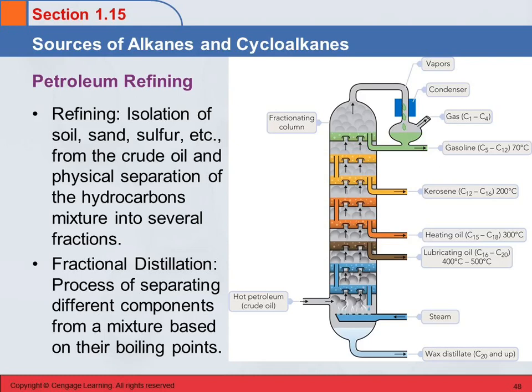So we take this crude oil, and this is an example of fractional distillation. They separate out the contaminants like sand and sulfur and stuff. Then they take the hydrocarbons that are left and do this fractional distillation. Distillation separates things based on their boiling points.